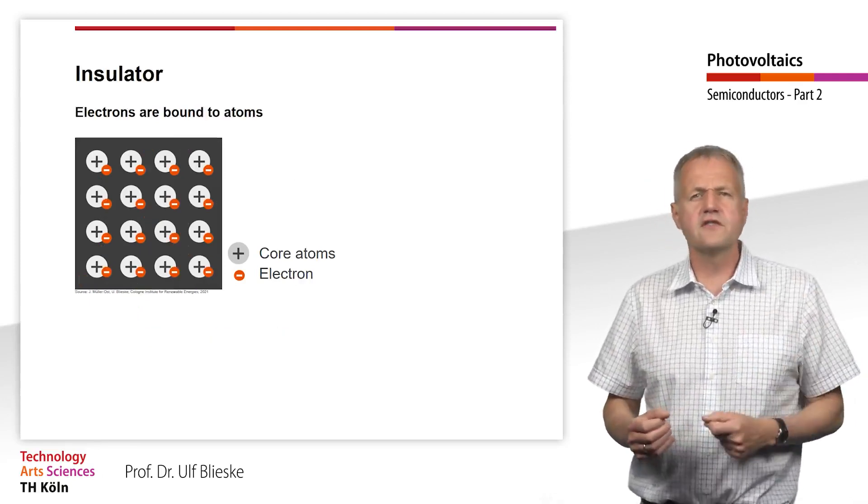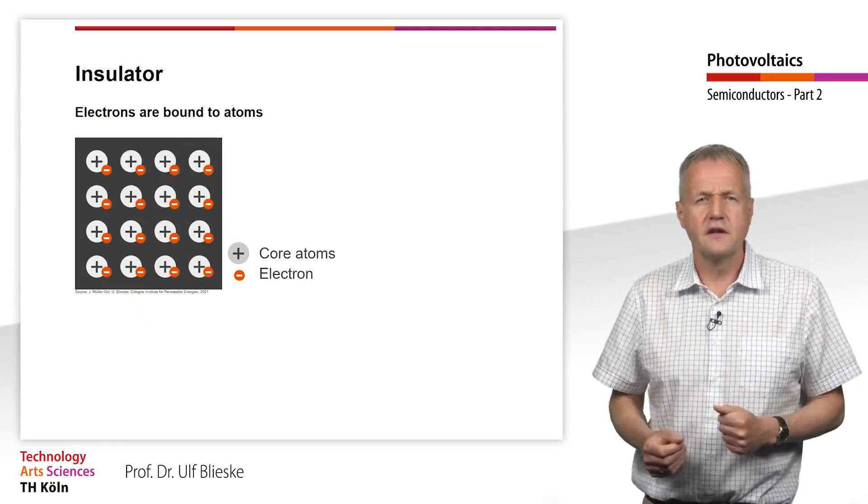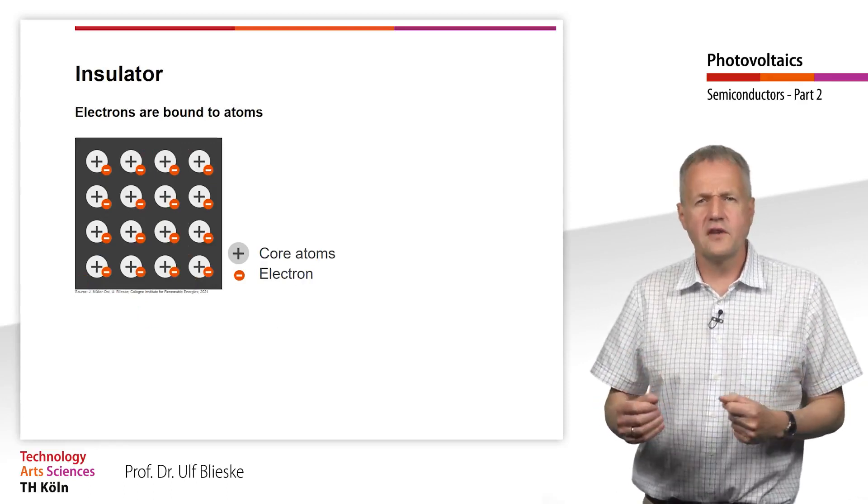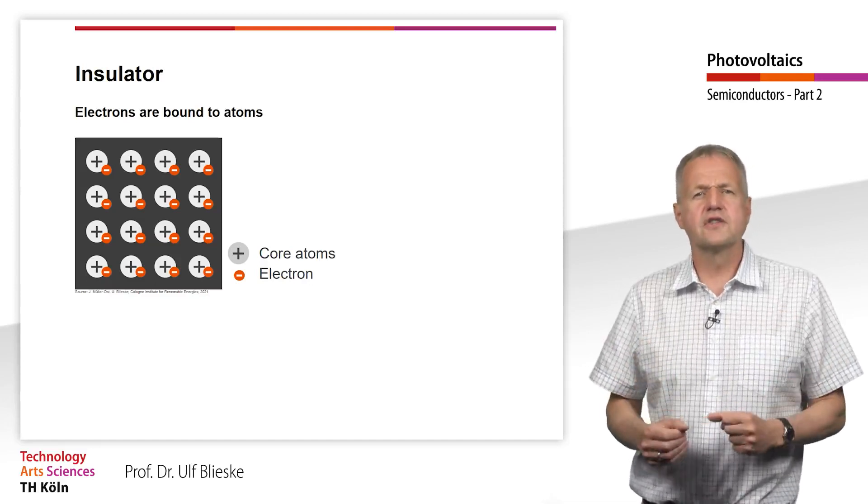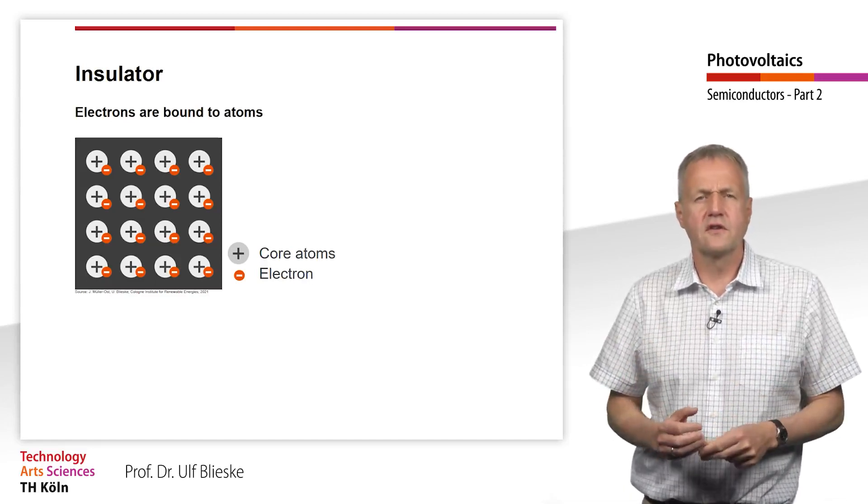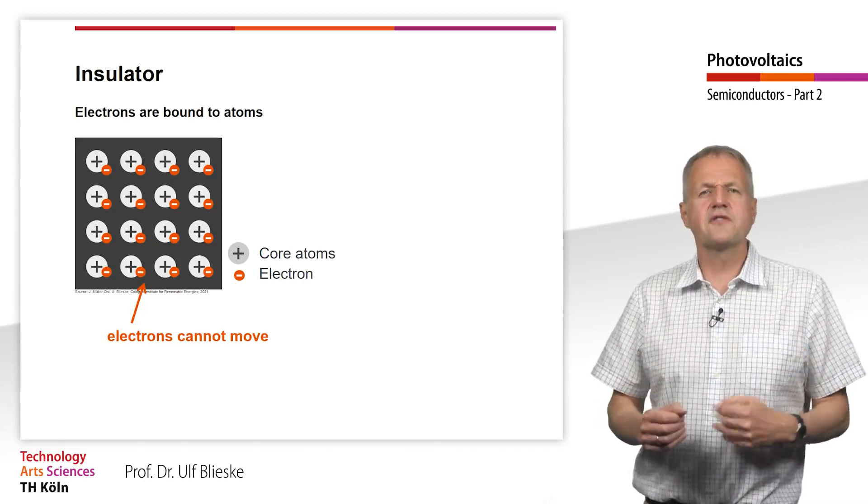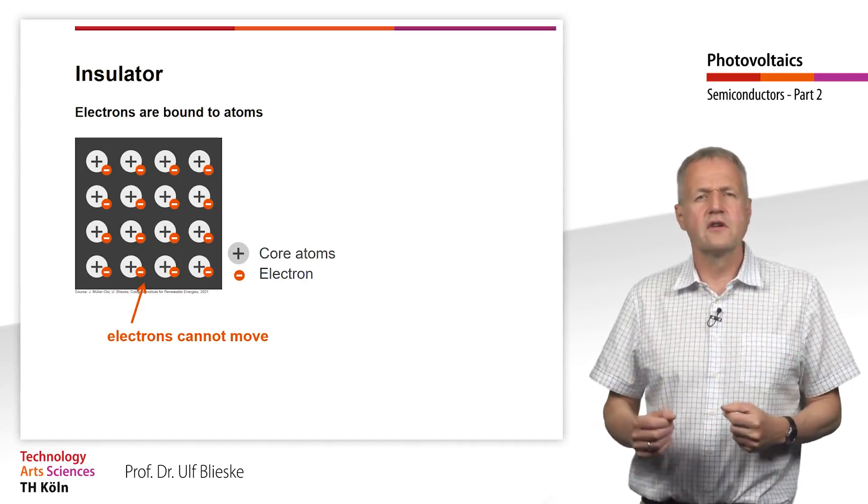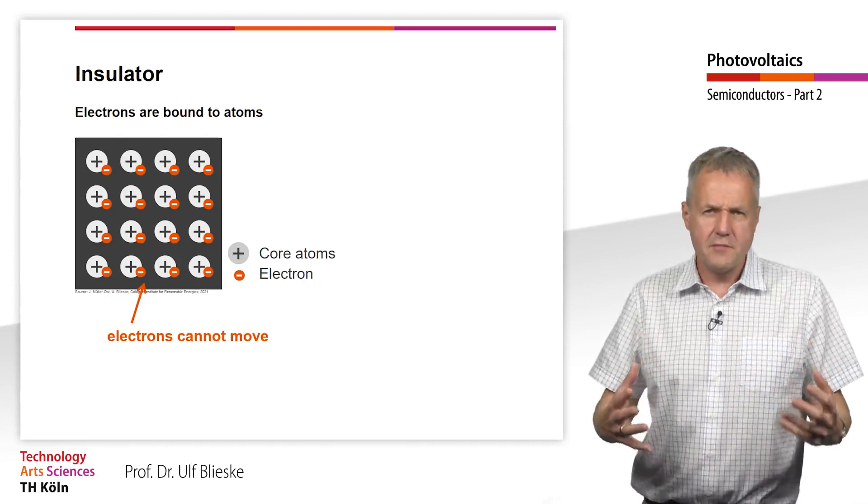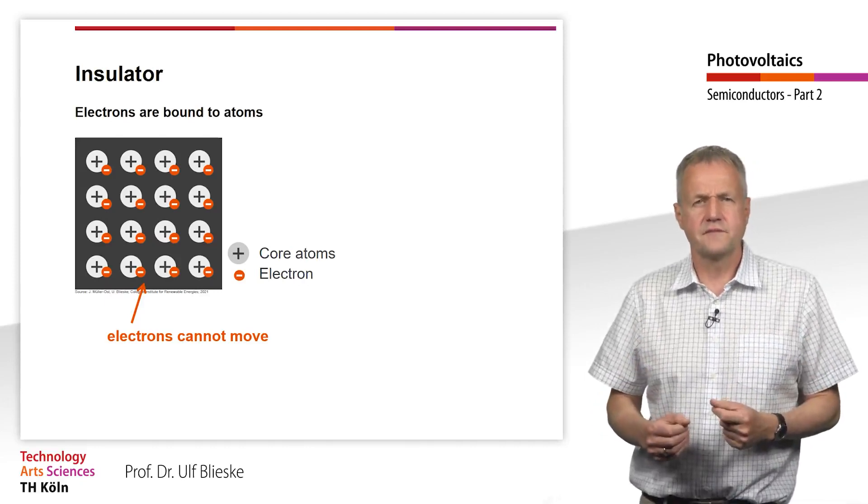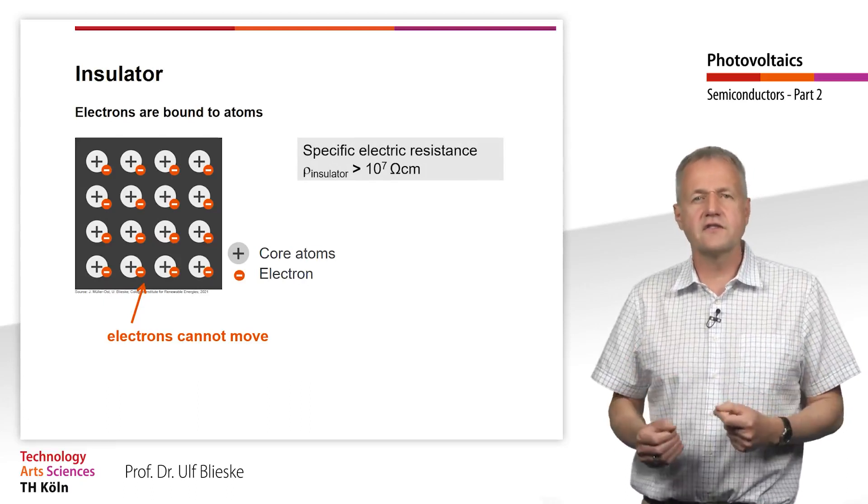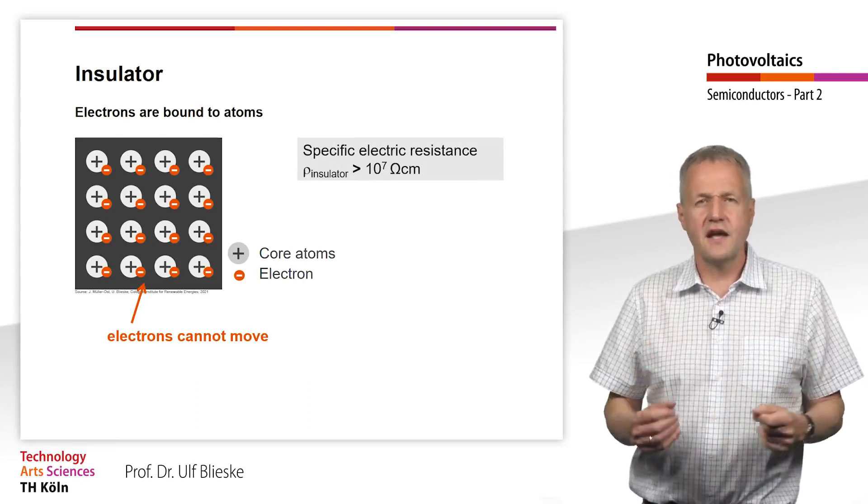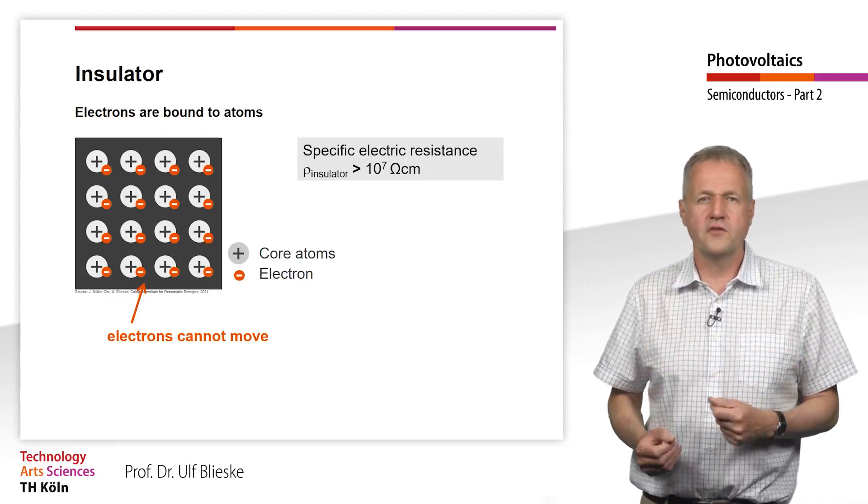The opposite is true for the insulator. Here also the electrons of the outer shell are bound to an atomic nucleus. So the electrons cannot move. This causes a very bad conductivity. The specific electrical resistance in insulators is greater than 10 to the power of 7 ohm centimeter.